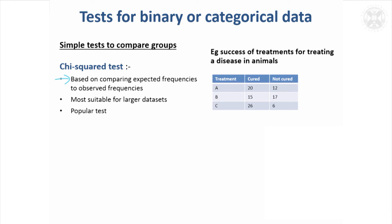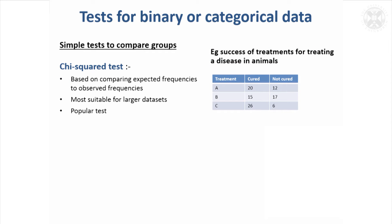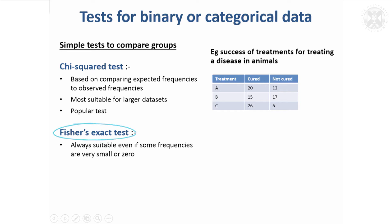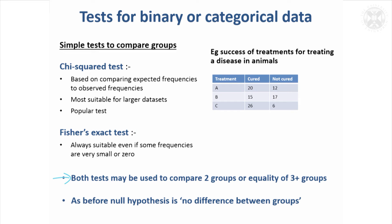The chi-squared test is used to compare frequencies. For example, you've got an outcome with three treatments and they either cure a certain number of animals or they don't, and we want to know if the cure rate differs between the three treatments. The chi-squared test is most suitable for larger data sets. An alternative is Fisher's exact test, named after a statistician called Fisher, which works with exact frequencies in each cell, so you never need to worry whether your data set is large enough. Both tests can compare two or more groups with categorical or binary data.